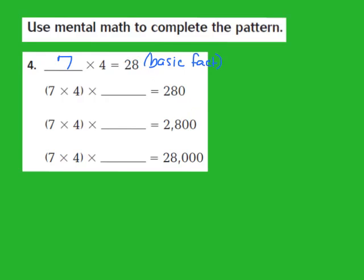I'm going to look at the next part in the pattern. They give me 7 times 4 times blank equals 280. I don't know the power of 10, but when I look at my product, I see that behind my 28 there is one 0. If there is one 0 behind that 28, I know I should write down the first power of 10, because my exponent should match the number of 0s in my product.